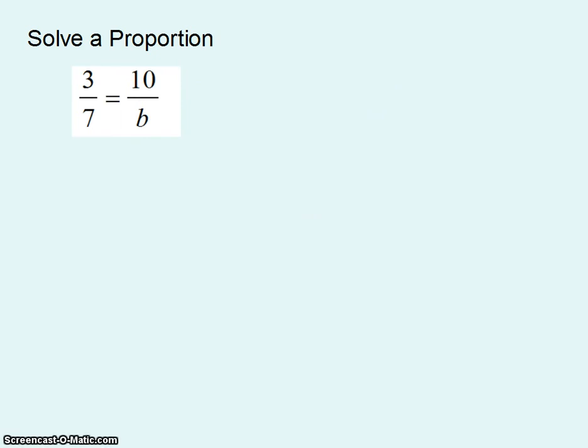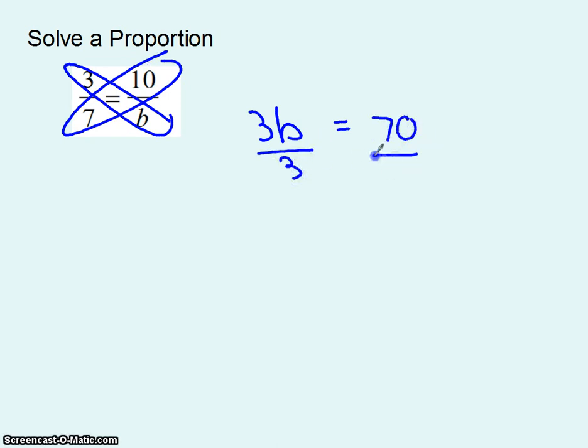I'm going to use the same cross product idea. Those two numbers multiplied together, 3b has to be equal to 7 times 10. 70. Well if they're equal then we can divide and you get either leave it as 70 thirds or if you feel like you need to write it as an improper fraction go ahead or a decimal.